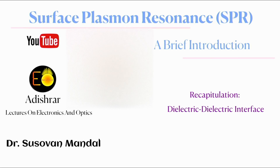I will try to keep my explanation as simple as possible so that an undergraduate student can also grasp the concept. But obviously, you must need some prerequisites. If you are an undergraduate student, you must have some knowledge regarding how an electromagnetic wave propagates, how losses take place, how the electromagnetic power propagates, and most importantly, the boundary conditions for the electric field, magnetic field, and the conservation law of the propagation vector.